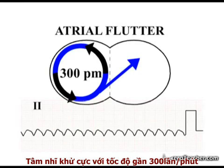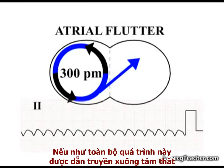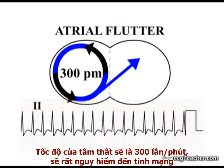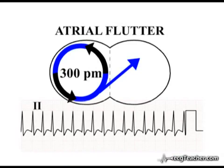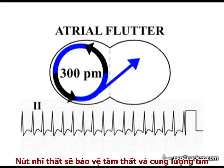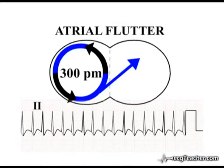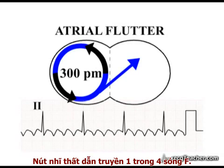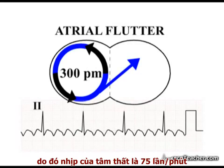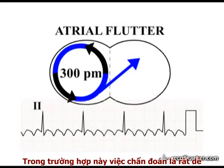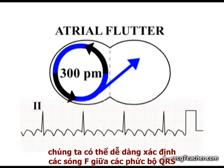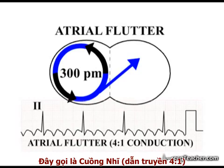The atria are depolarizing approximately 300 times every minute. If this were transmitted to the ventricles, a ventricular rate of 300 beats per minute would be potentially fatal, as the chambers fail to fill between beats. The AV node protects the ventricles and cardiac output by selectively blocking transmission of a proportion of flutter waves. In the example shown here, the AV node is conducting 1 in every 4 flutter waves, giving a ventricular rate of 75 beats per minute. We can easily identify the flutter waves between episodes of ventricular activity. This is atrial flutter with 4 to 1 conduction.